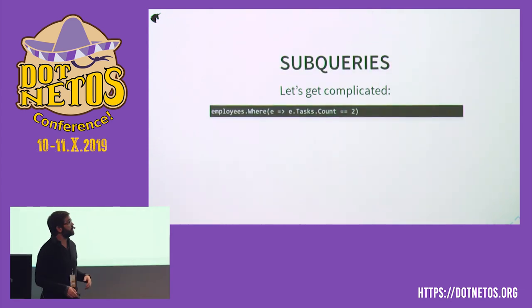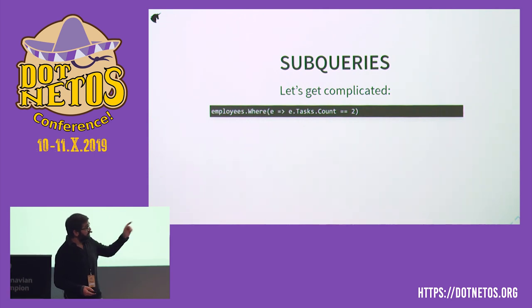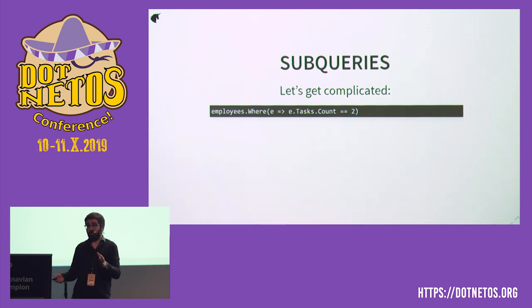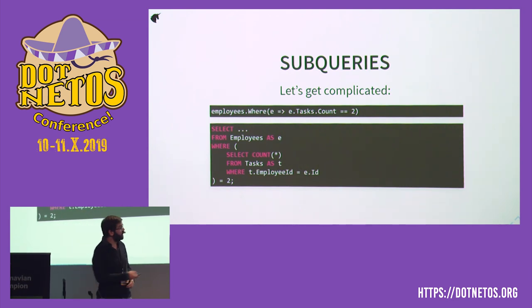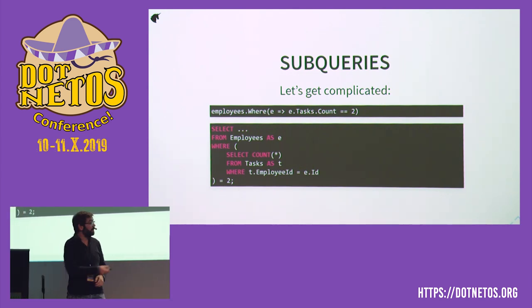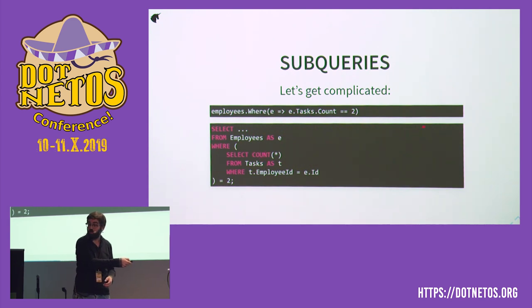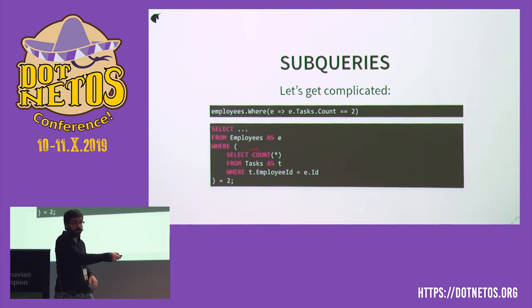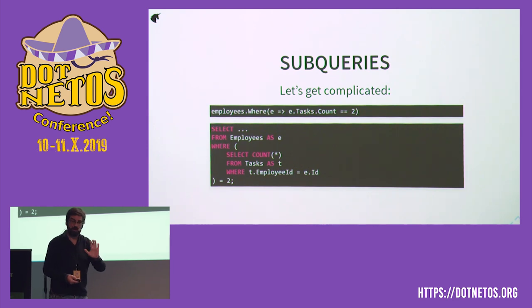Let's go over a few more translation examples — a bit more complicated. Let's say we want all employees where their task count equals two. Now we have a related table, a foreign key relationship. The natural way to translate this is a subquery in SQL — we open a parenthesis and have another query inside. That inner query returns one scalar value: a single count for that employee, which we compare to two. It's a complex transformation: we have to transform this LINQ construct into that SQL subquery.